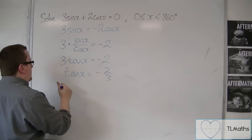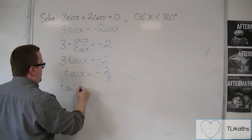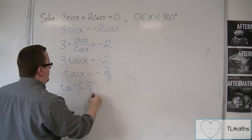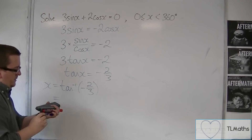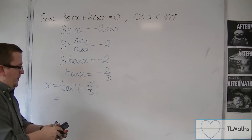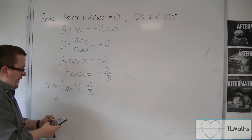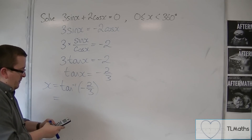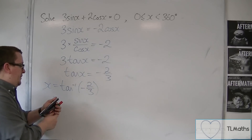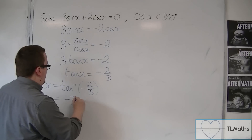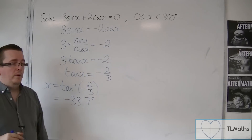So we're going to inverse tan both sides — we're going to get inverse tan of minus 2/3. This is what x is equal to. We need to make sure our calculator is in degrees, and then inverse tan of minus 2/3 is minus 33.7 degrees, to one decimal place.